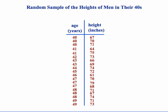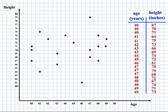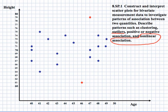Now consider the heights of adult men already in their 40s. Plotting that data shows a nonlinear association — the points do not follow a linear pattern. There appear to be two outliers: one 46-year-old man who is about 5 foot 1 (61 inches), and one 47-year-old man who is 79 inches tall, about 6 foot 7. Those two men are shorter and taller than most.